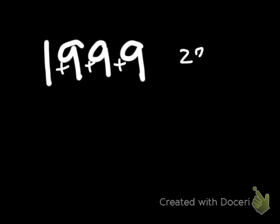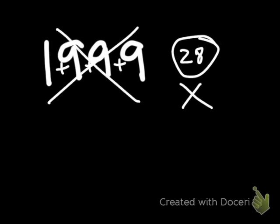Does 9 go into 1,999? Let's add up all the digits: 1 plus 9 is 10, plus 9 is 19, plus 9 is 28. Does 9 go into 28? No, it doesn't. So because 9 does not go into the sum of the digits, 9 will not divide evenly into 1,999.